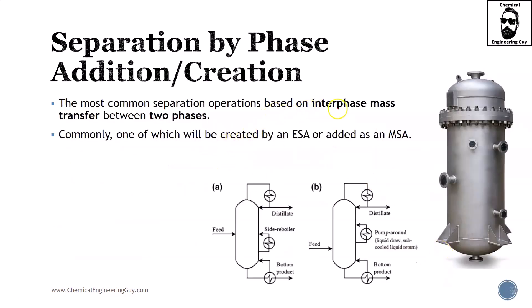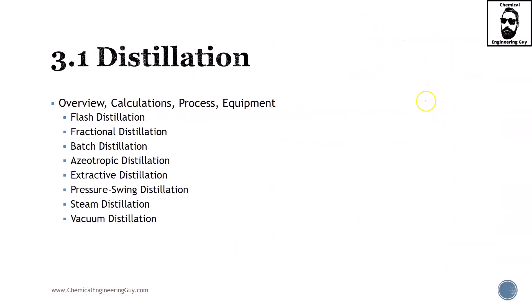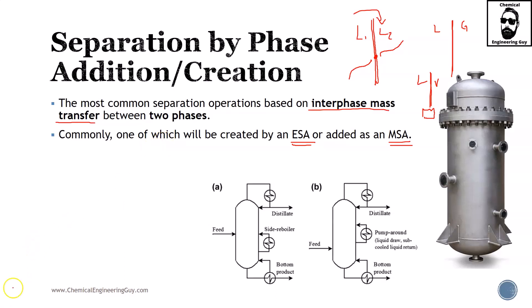The most common separation operations are based on interface mass transfer between two phases. These interfaces are very important - between liquid one and liquid two, you have this so-called interface in which you see interaction of both materials. The same is true for liquid and gas or liquid and vapor - that point of interaction is the interface point. Commonly, one of which will be created by an energy or material separating agent. If you're adding a solvent, by definition you are creating this interface. If you're adding heat, you are creating vapor, therefore you created your ESA. The first case we're going to see is distillation.